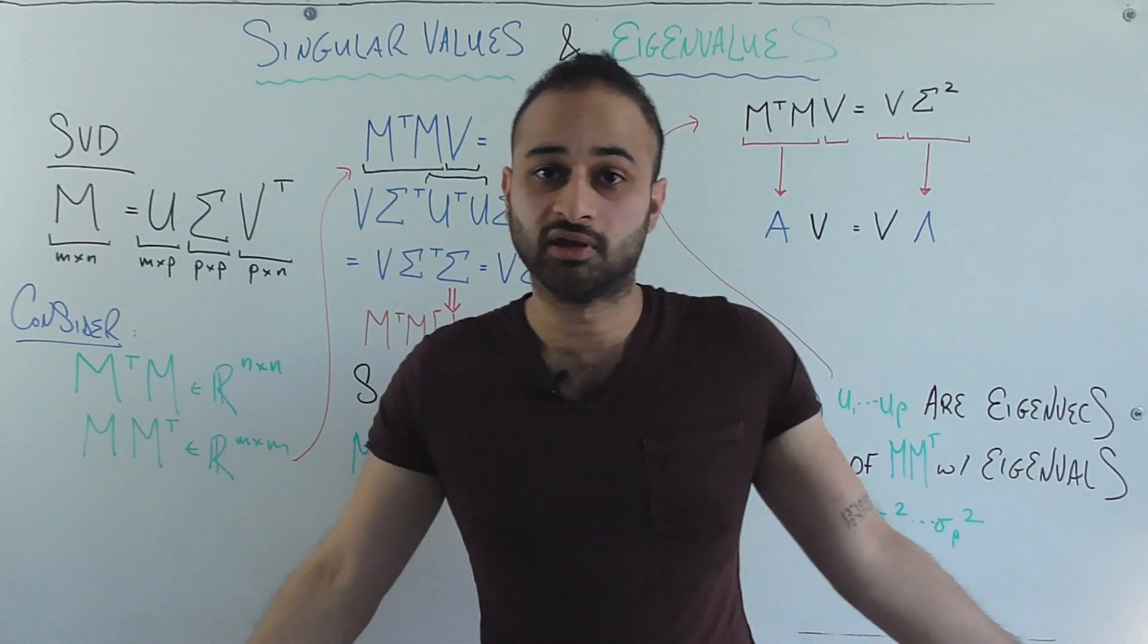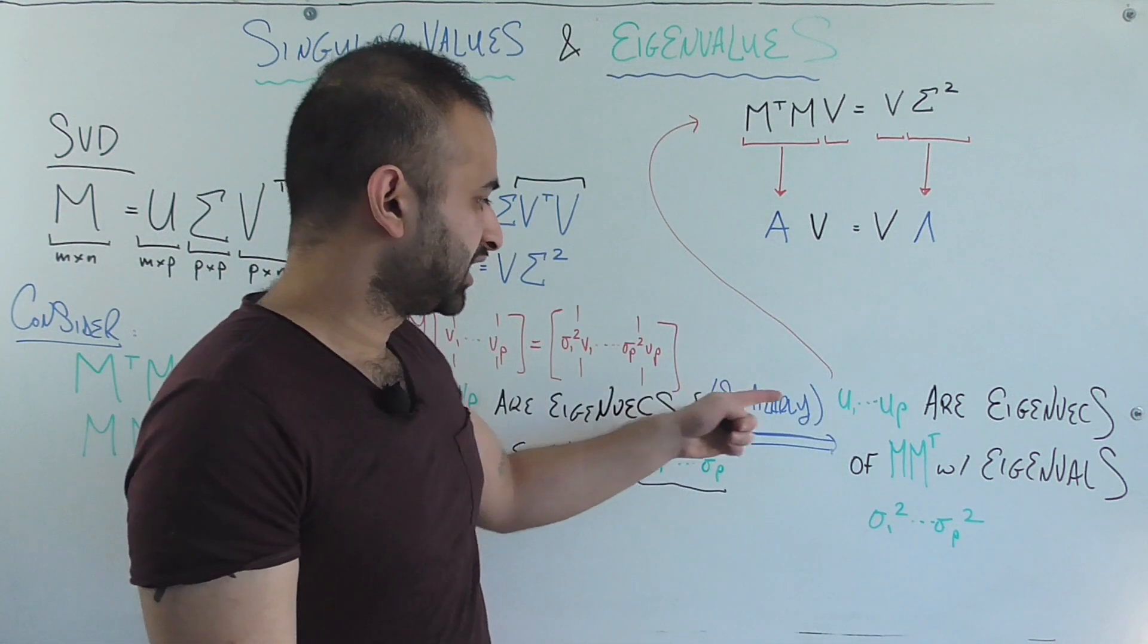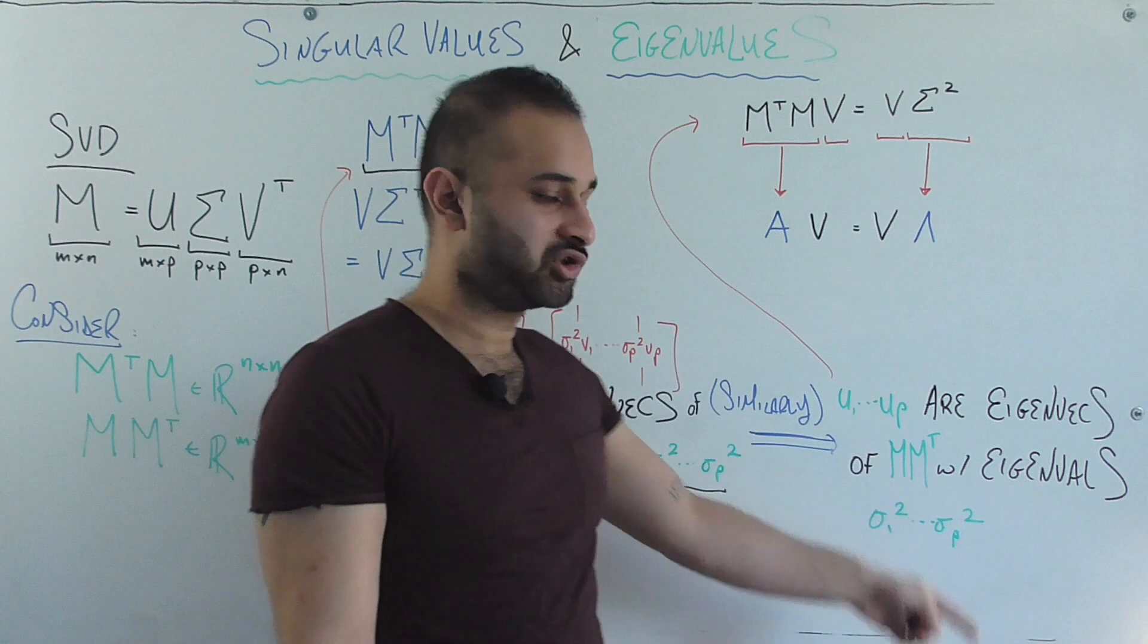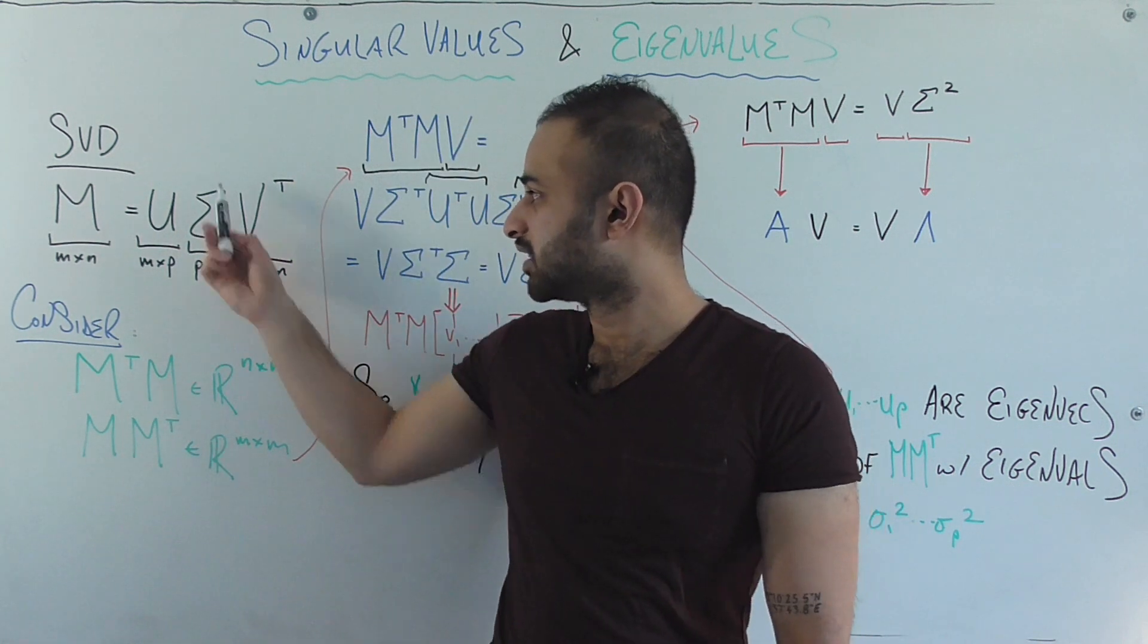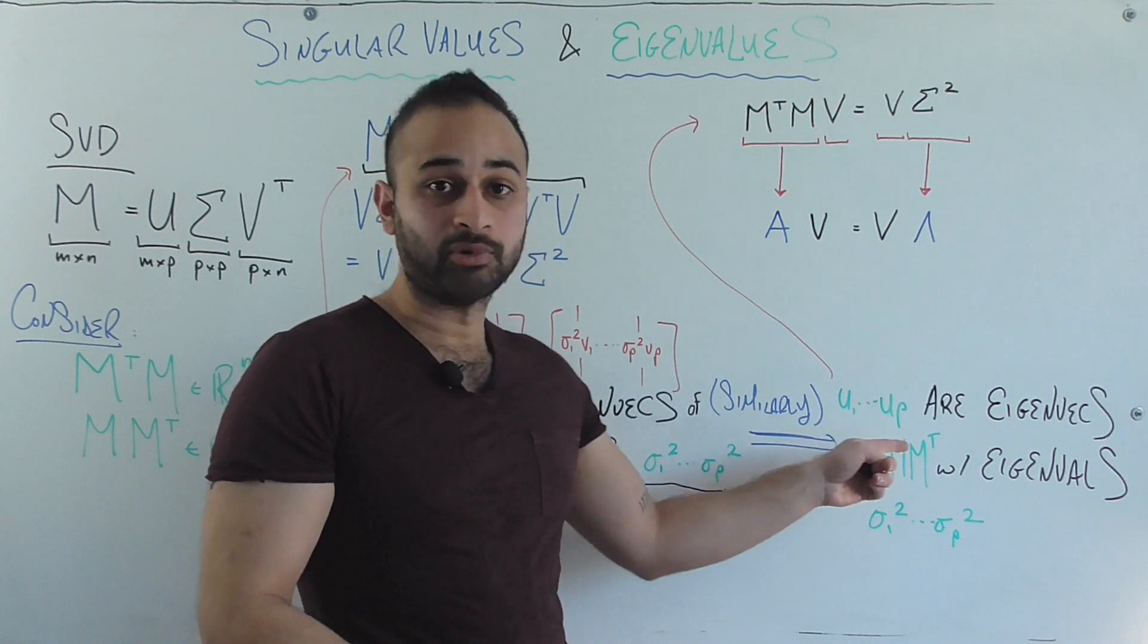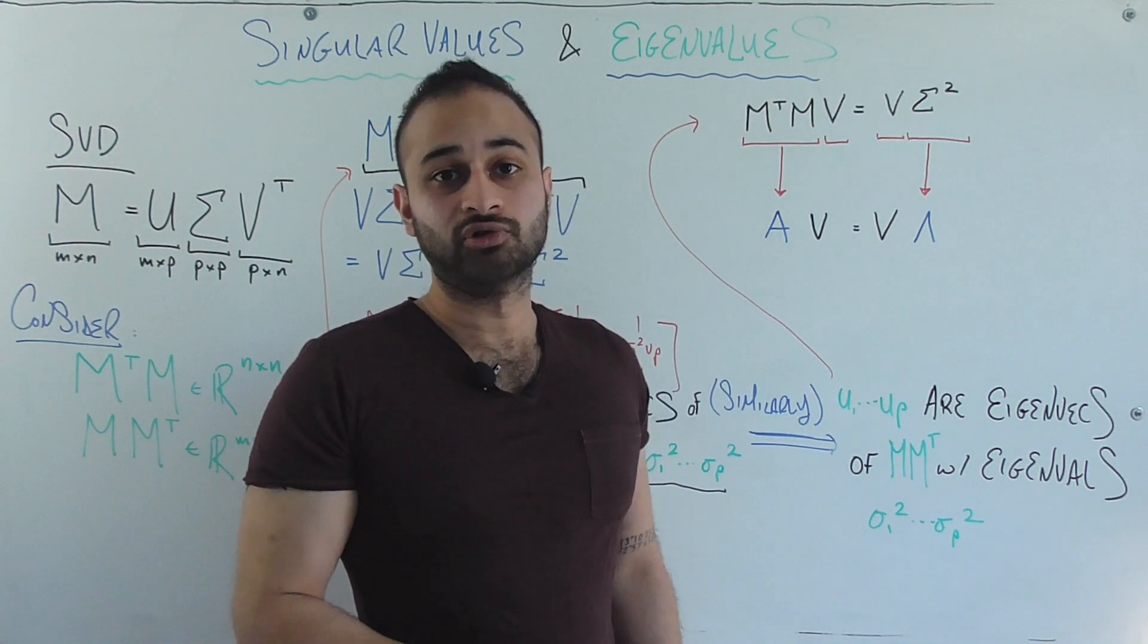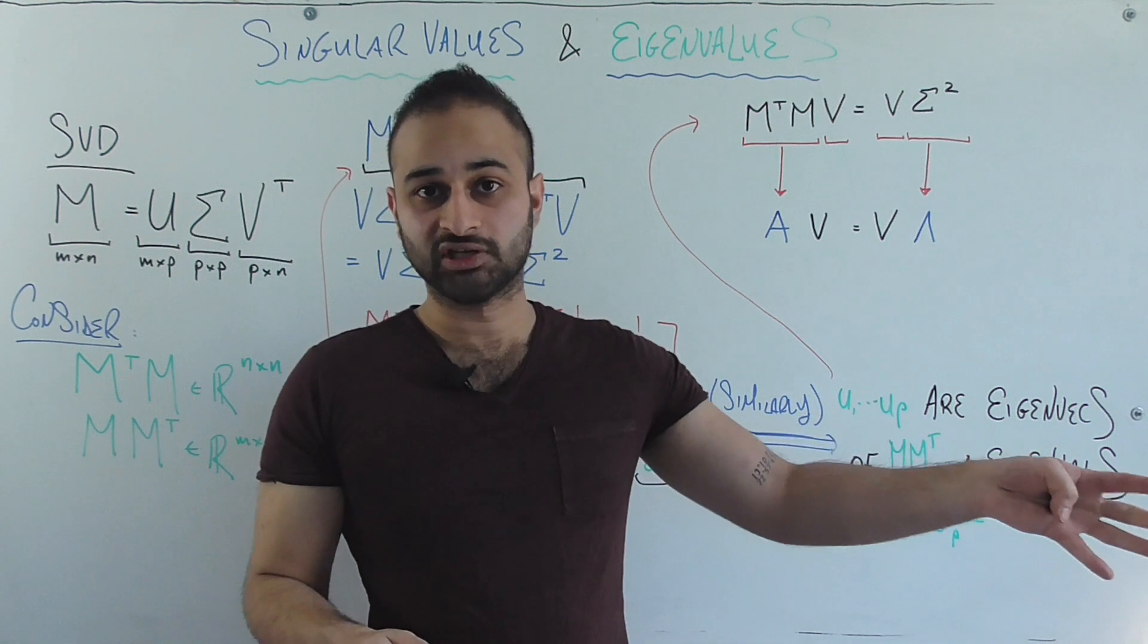And we can do a very similar thing for U. I won't go through the calculation because it's the same, but we get the same conclusion, which is that U one through U P, which again are the component vectors that make up matrix U, are the eigenvectors of M M transpose, which is this other guy. And the eigenvalues are also the square of all the singular values.